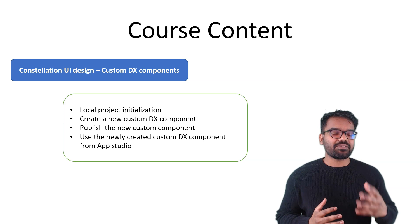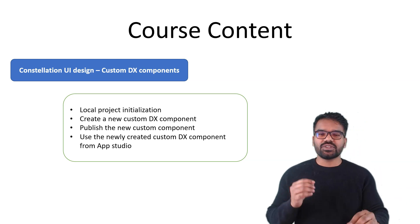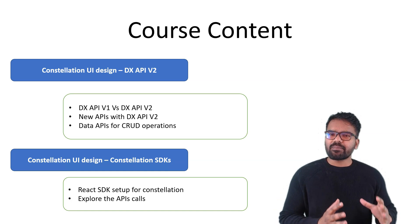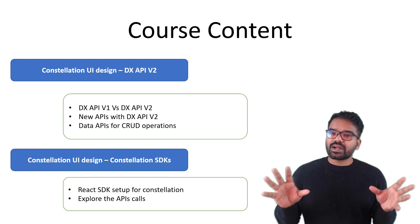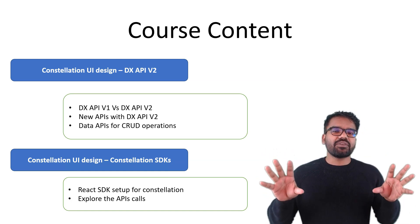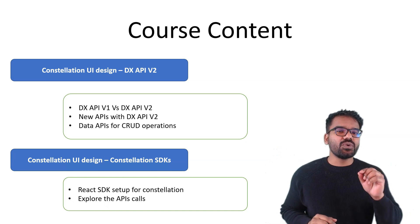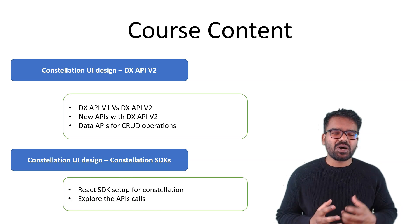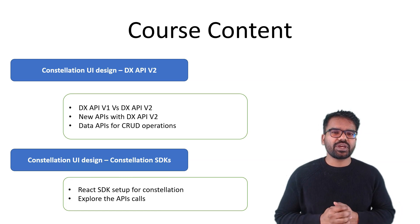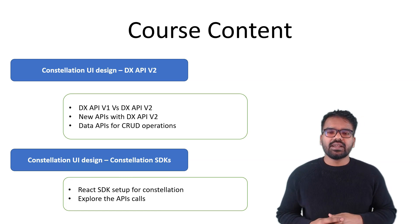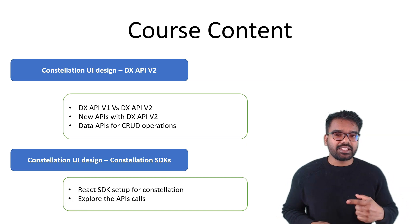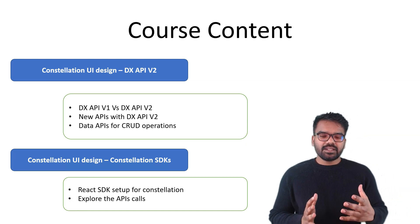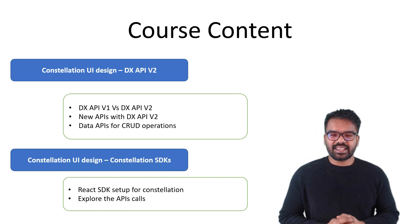At this point you will have a lot of confidence in using constellation applications. Then we get into DX API version v2. We will compare DX API v1 and v2, understand the newly introduced APIs, and extensively talk about CRUD operations you can do with the data APIs. These were introduced in version 8.8, which will be really informative with saveable data pages.